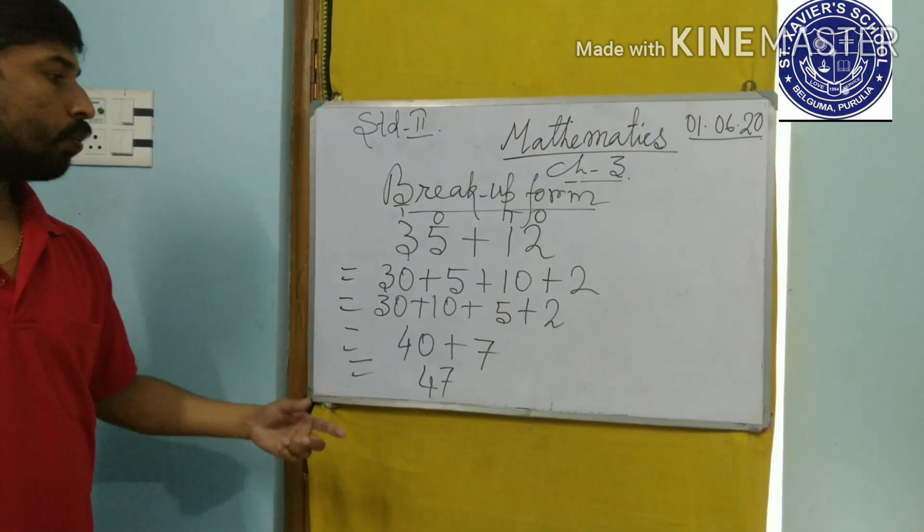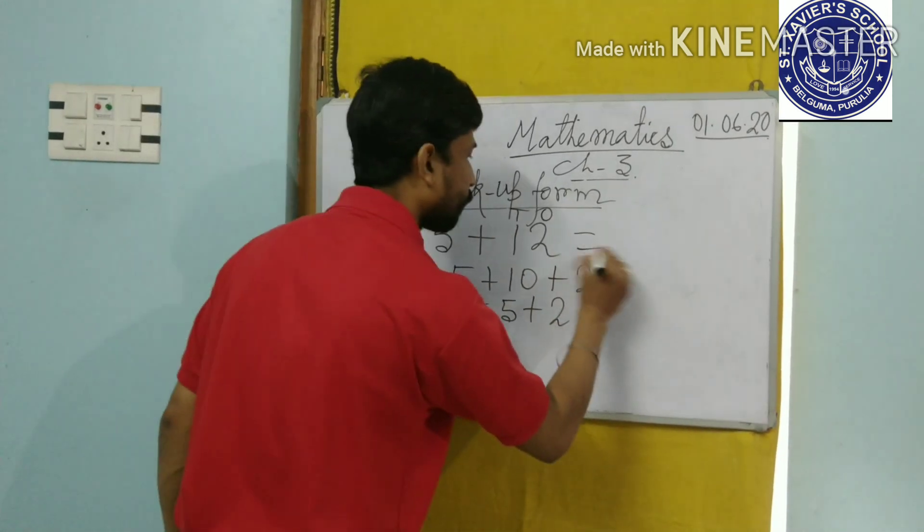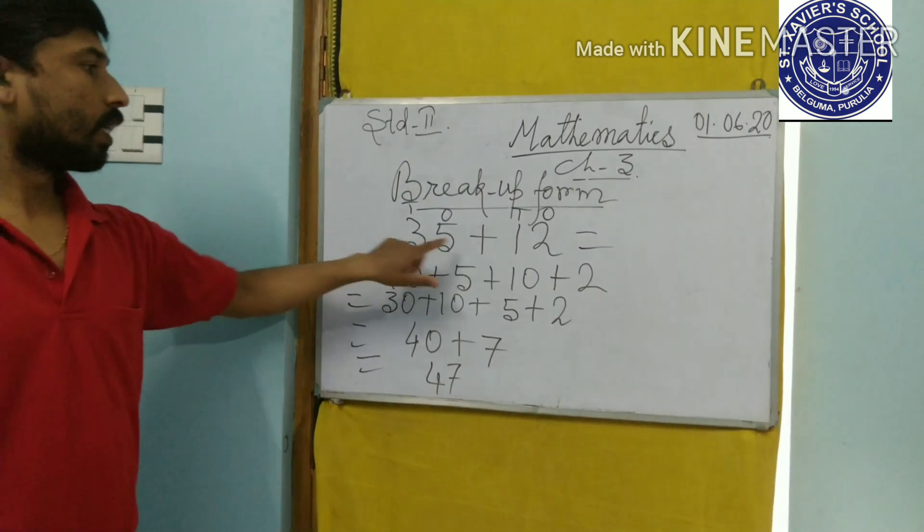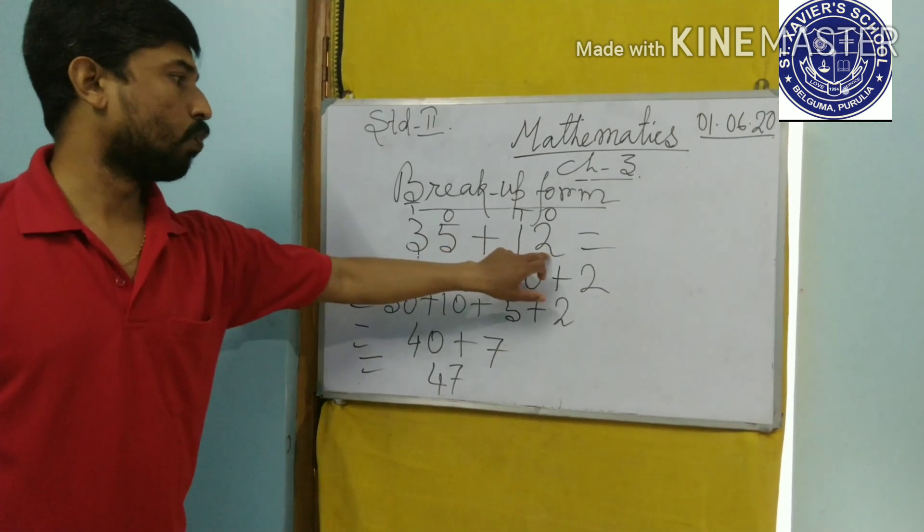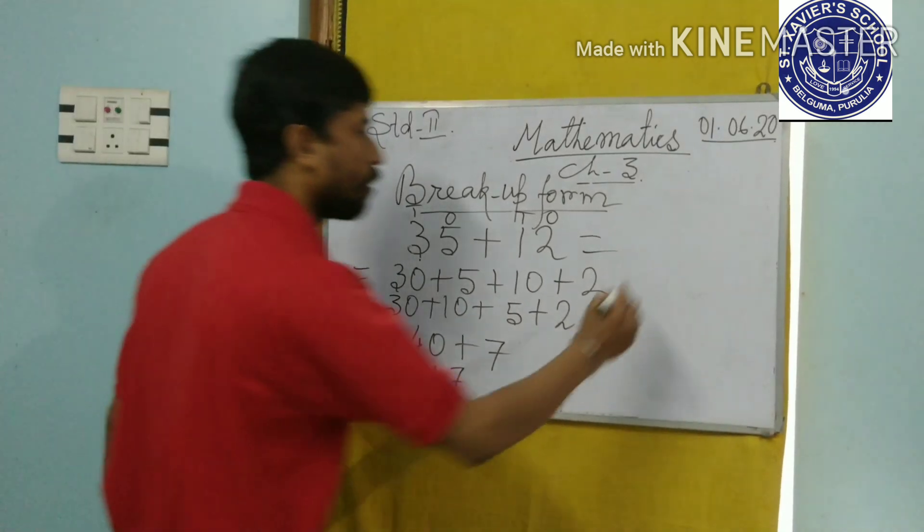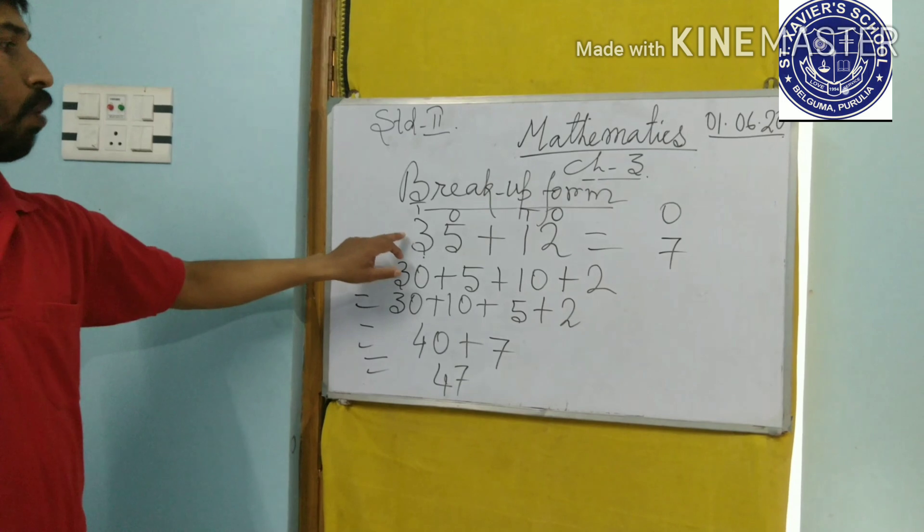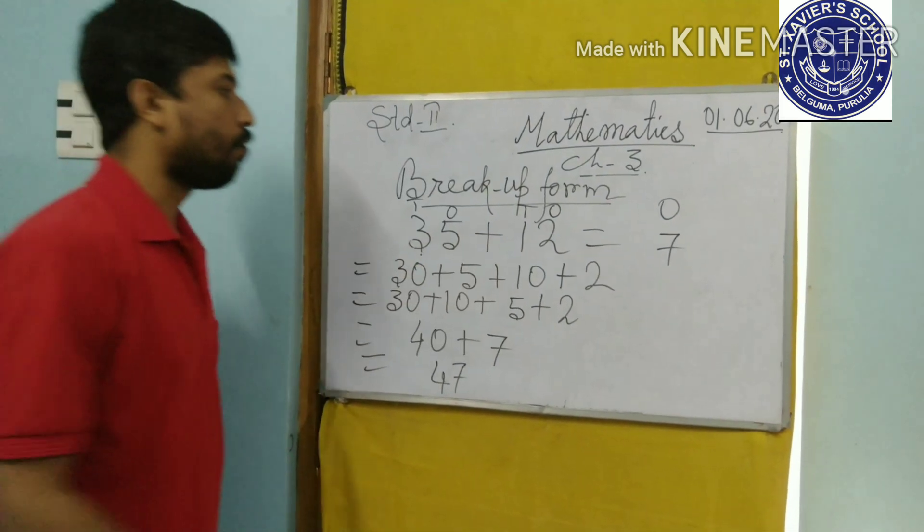Now, if you do it in your mind. How to add this? Look, 3 tens, 5 ones, 1 ten, 2 ones. First, we will add 1's place. 5 plus 2 gets 7. So first, we will write in 1's place, 7. And now, 3 plus 1, 4.